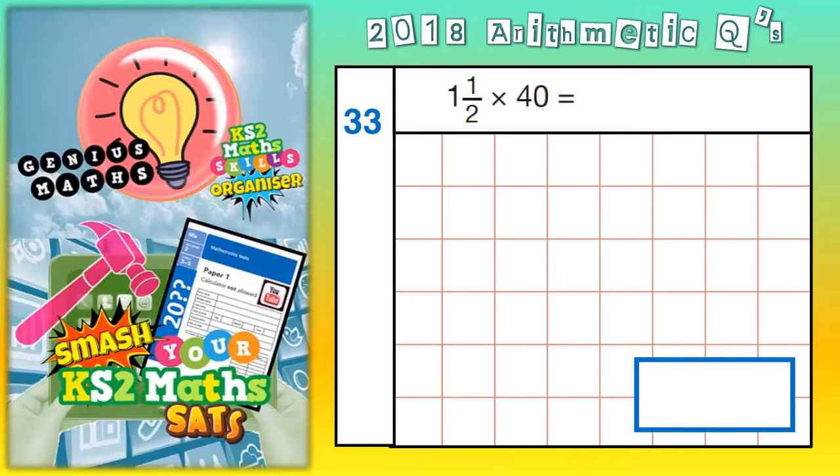Now, the easiest thing to do here is split the question. So instead of times 1½ by 40 all in one go, we're going to make two separate calculations. So 1 times 40, and then we're going to do ½ times 40.